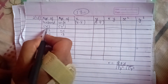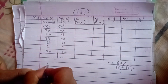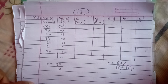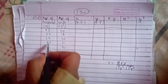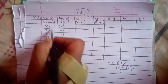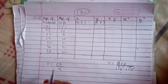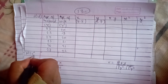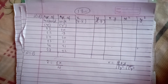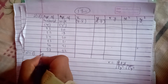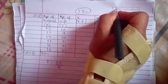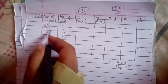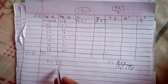We need to find x minus x̄, where x̄ is the mean. The mean is calculated as summation of x divided by n. We sum all x values and divide by the number of data points n.